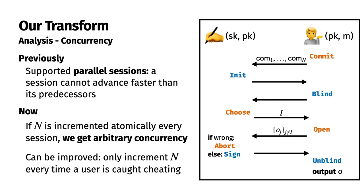We also prove that you can do better than incrementing every time. In fact, we show that it suffices to only increment n when a user is caught cheating.